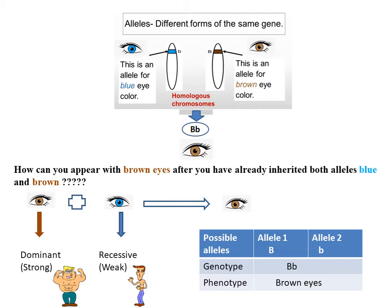In the case of different alleles, just the strong — in biology, the dominant allele — will appear and be expressed at birth, while the weak one, which in biology is called recessive, will hide and be masked.